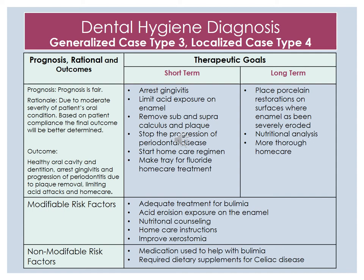Modifiable risk factors include adequate treatment for bulimia, acid erosion and exposure on the enamel, nutritional counseling, home care instructions, and improving the xerostomia caused by her medications. Non-modifiable risk factors include the medications she is using to help with her bulimia and the required dietary supplements for her celiac disease.